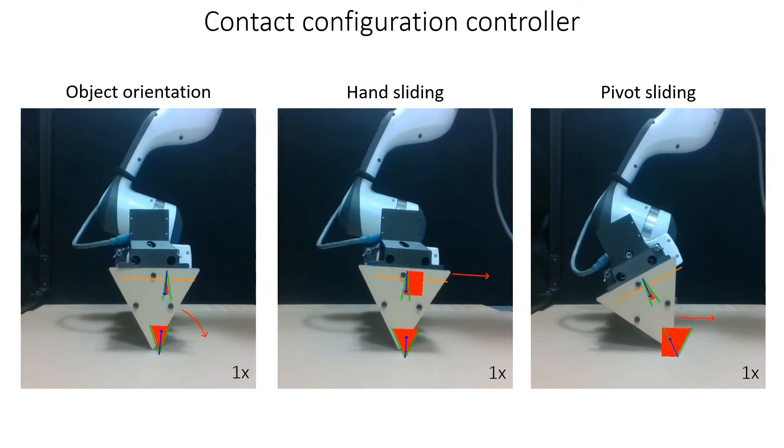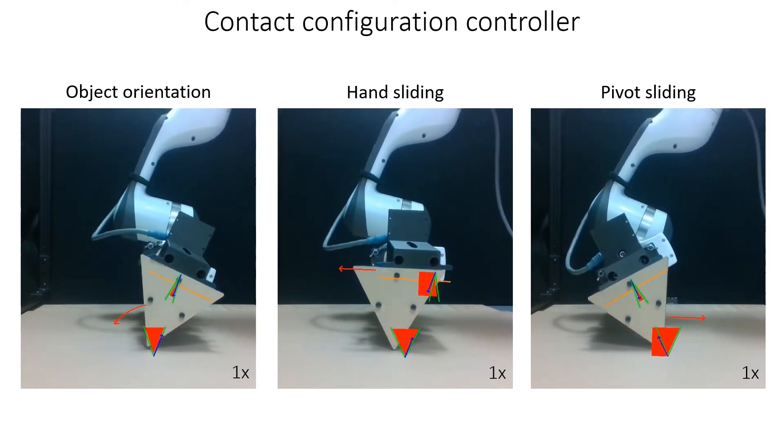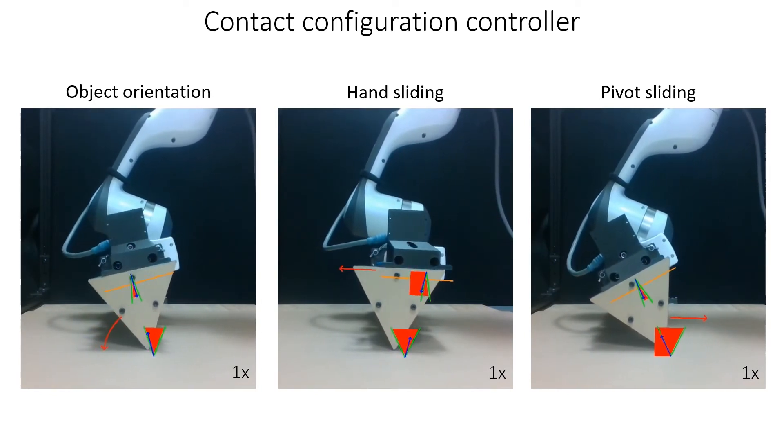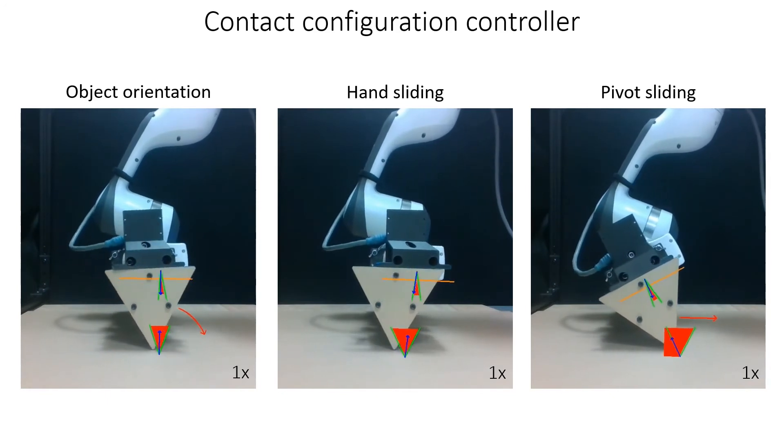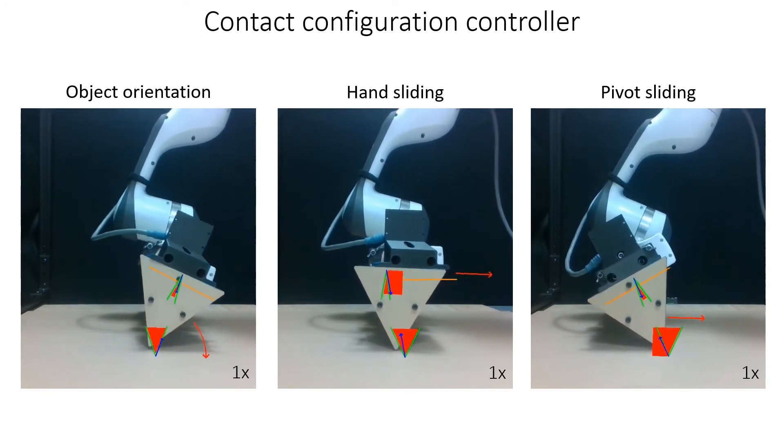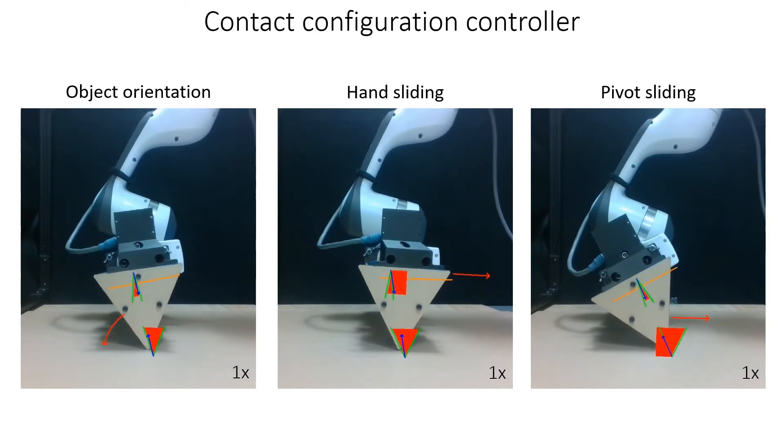The QP constraints, whose interior is visualized in red, maintain the contact mode by ensuring that the appropriate subset of the estimated wrench cone constraints are enforced. Maintaining the contact mode constrains the system's pose to evolve as desired.